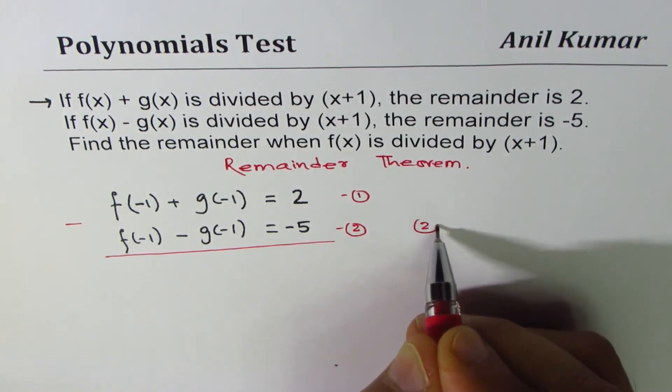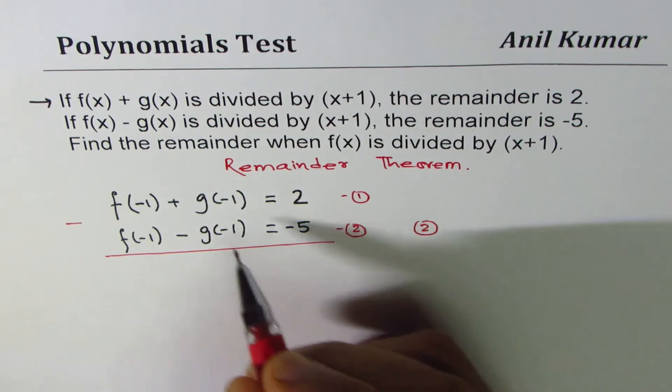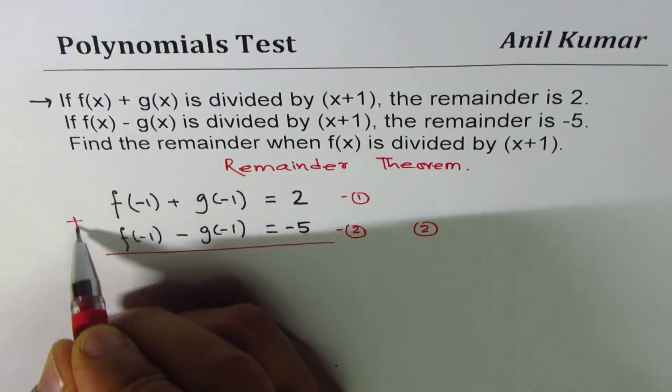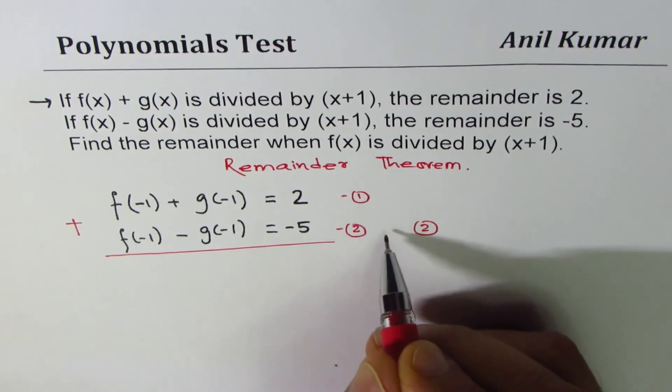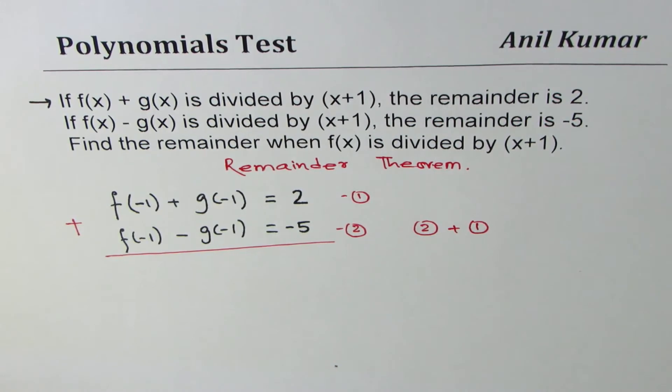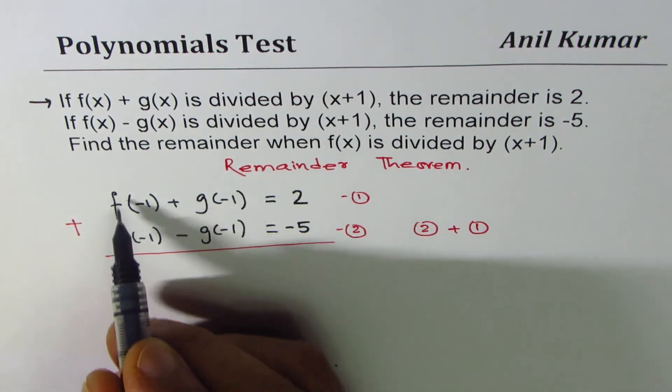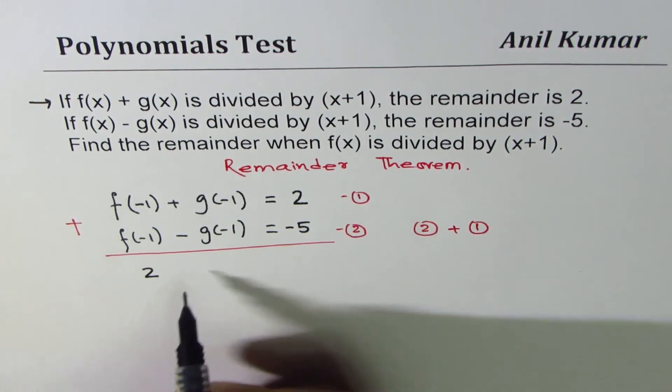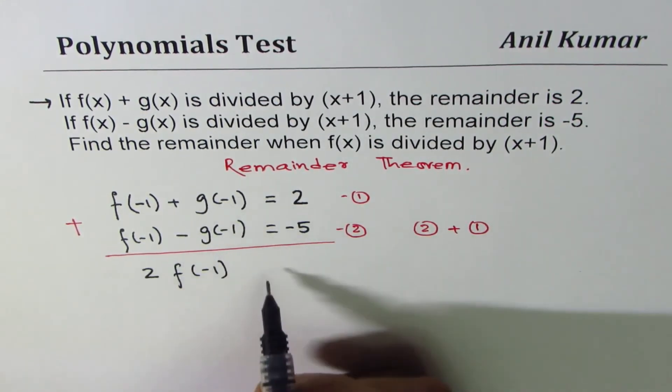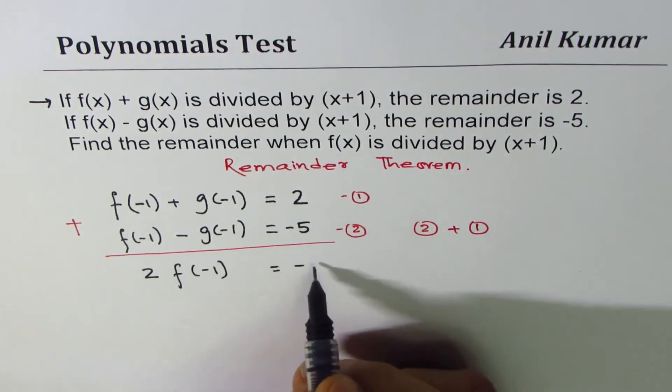What do you do? You add equation 2 plus equation 1 to eliminate g. So if I add them I get two times f of minus 1. They cancel out and I get minus 3 here.